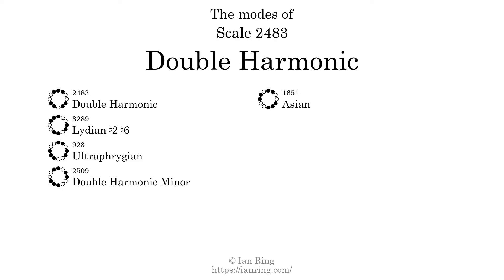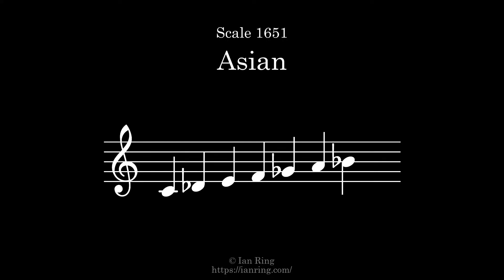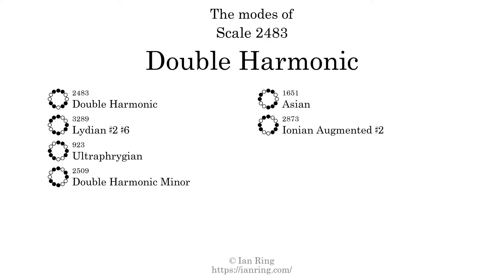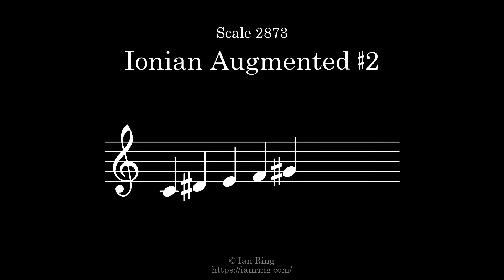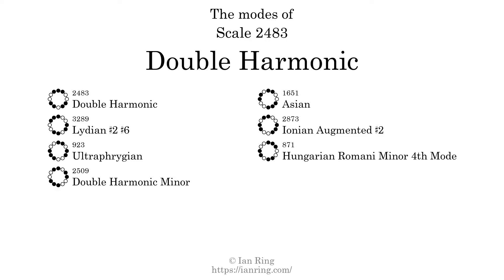The fifth mode is scale 1651, also known as Asian. The sixth mode is scale 2873, also known as Ionian augmented sharp 2. The seventh and last mode is scale 8873, also known as Hungarian-Romani minor, fourth mode.